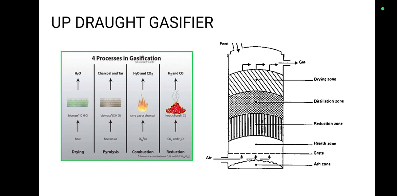Then pyrolysis process, after that combustion process, and then the reduction process. Finally, the biogas is formed and taken from the upward side. The remaining thing after it becomes charcoal is taken from the bottom side of the gasifier.